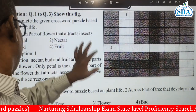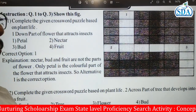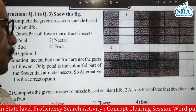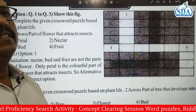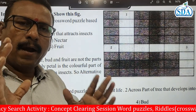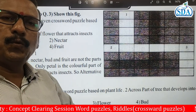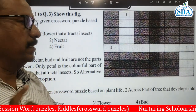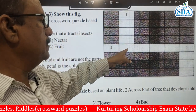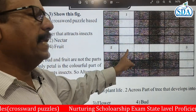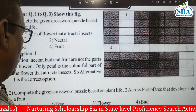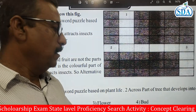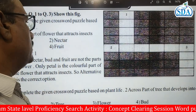The next question: complete the given crossword puzzle based on plant life. The clue is: Across — part of the tree that develops into a fruit. The part of a plant which develops into a fruit is nothing but the flower. Also, since P-E-T-A-L is already placed, the second answer must share the letter L, which matches flower.